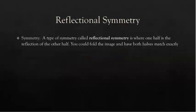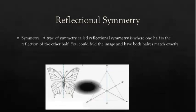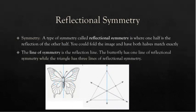Let's talk about symmetry. There is a type called reflectional symmetry — this is what we normally think about when we say a shape has symmetry. One half is the reflection of the other half, so if you fold the image, both halves match. In nature, a butterfly has reflectional symmetry — the left side looks the same as the right side. Humans also have a fair amount of reflectional symmetry. The line of symmetry is the reflection line. The butterfly has one line of reflectional symmetry, but an equilateral triangle has three: down each vertex to the opposite side.